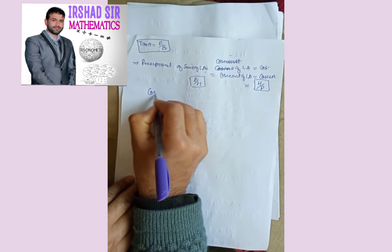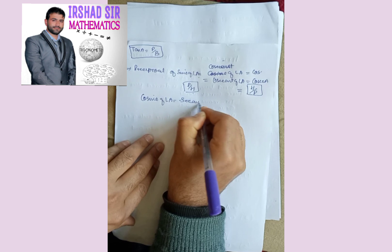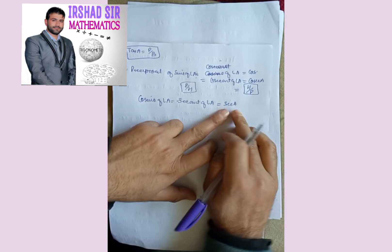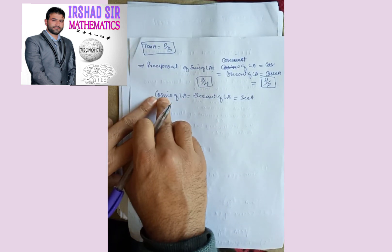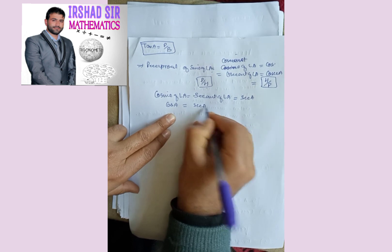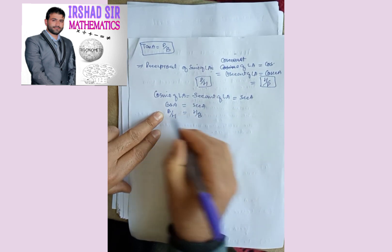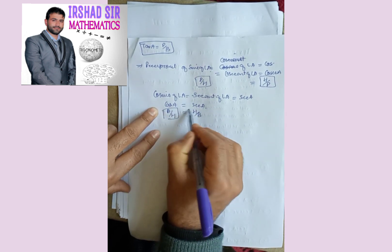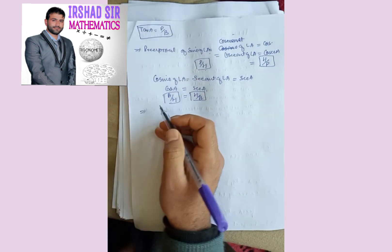The second reciprocal: cosine of angle A has the reciprocal secant of angle A, abbreviated as sec A. If cos A is base by hypotenuse, then sec A, the reciprocal, is hypotenuse by base. You have to remember these ratios.